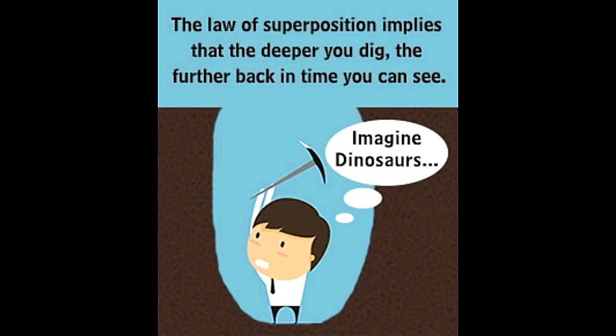Interesting fact: the law of superposition was formulated back in the 17th century by Danish scientist Nicholas Steno. He attributed the formation of most older layers of rock to the Great Flood mentioned in the Bible, and used the law of superposition to establish an interconnection between the rocks that he believed to have been formed before the Flood and the ones that he thought had formed after it.